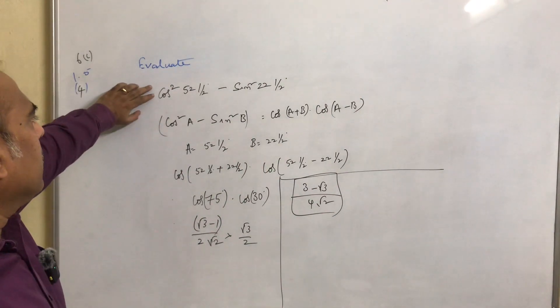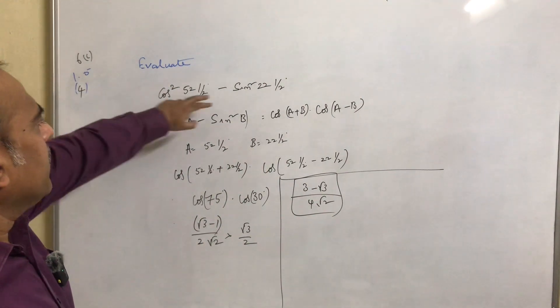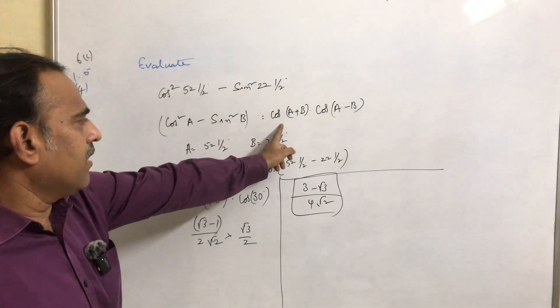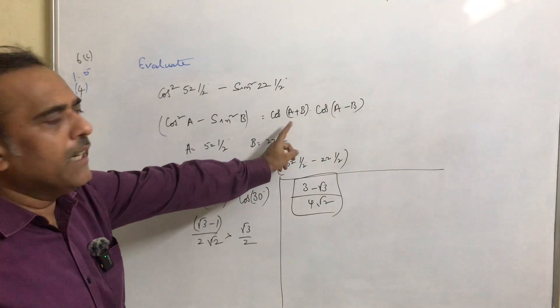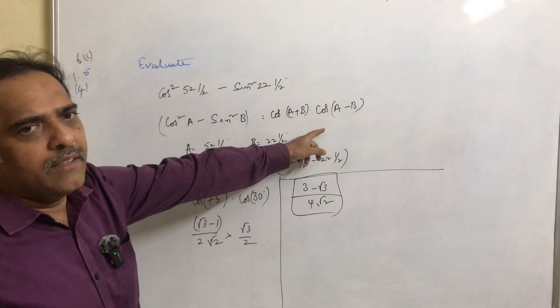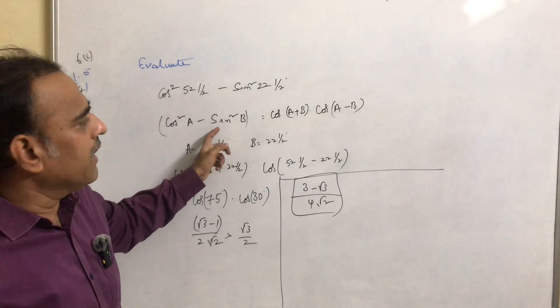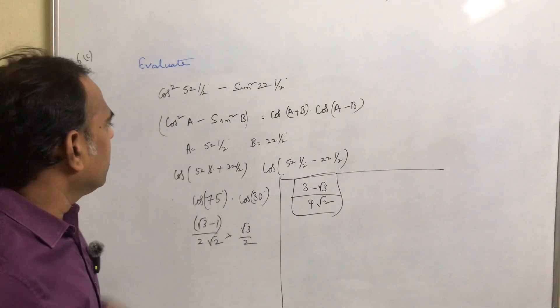We have a formula, right? What is the formula for cos²a - sin²b? Cos²a - sin²b equals cos(a + b) × cos(a - b).